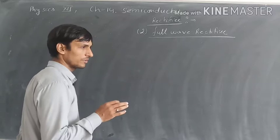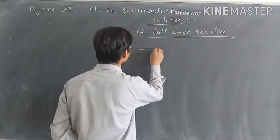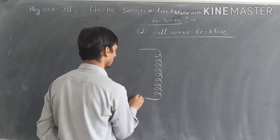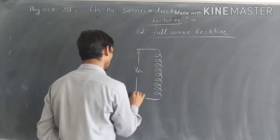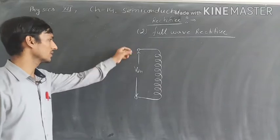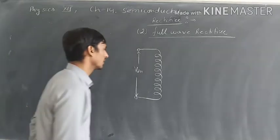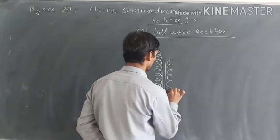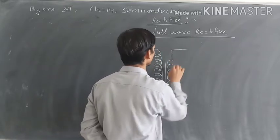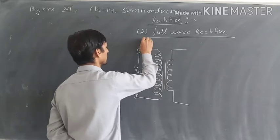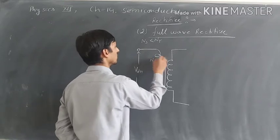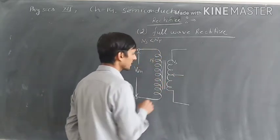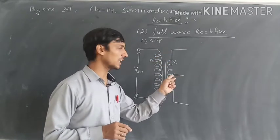So, how can we design a center tap full wave rectifier? First of all, for the input voltage we have a complete step down transformer — this is the step down transformer with V input. For center tap, this is the primary winding, then we have flux linkage. Number of turns in secondary coil is less than the number of turns in primary coil, so NS is less than NP.